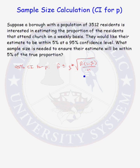What does it mean when the borough says they want their estimate to be within 5% at a 95% confidence level? That means that they want this term of the confidence interval, which has a special name, the margin of error.